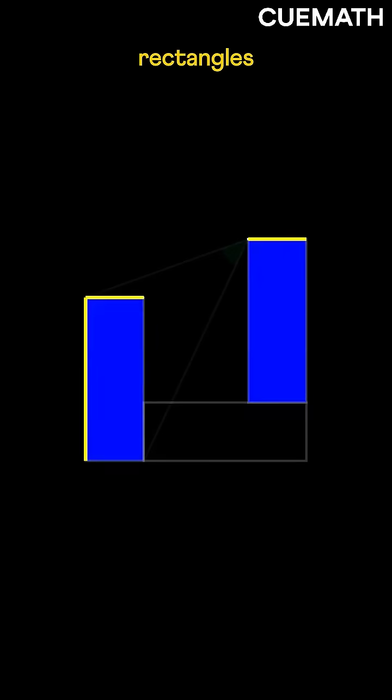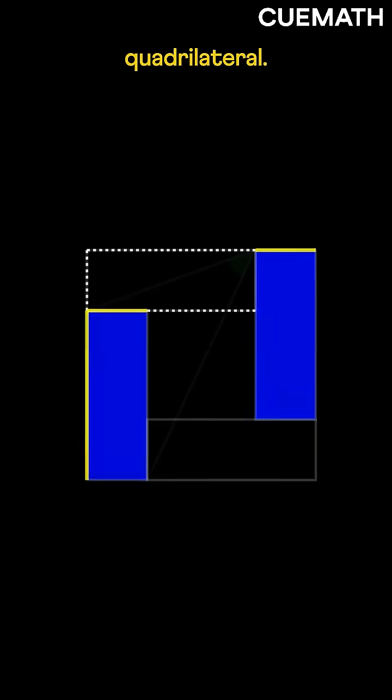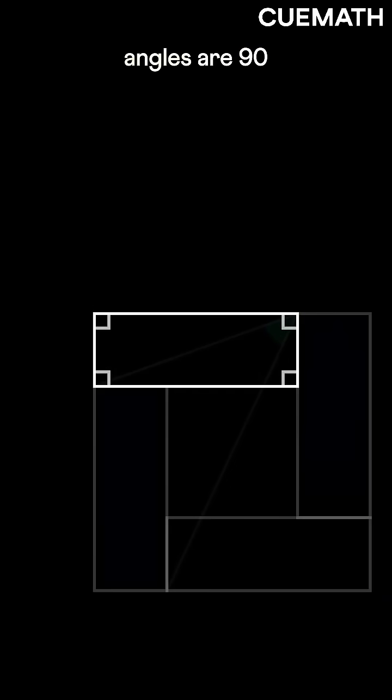If we extend these sides of the two rectangles until they meet, they form a quadrilateral. Since all these angles are 90 degrees, this must be a rectangle.